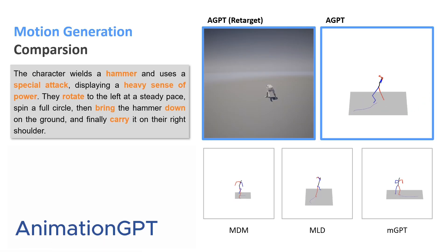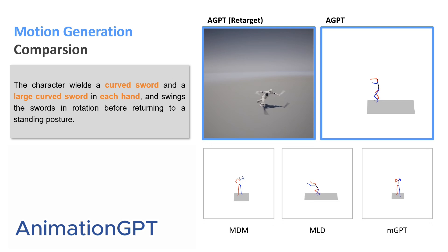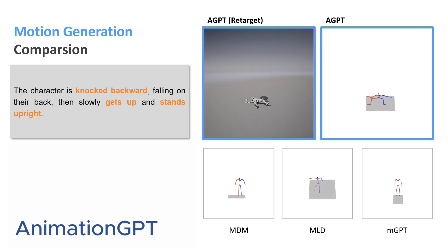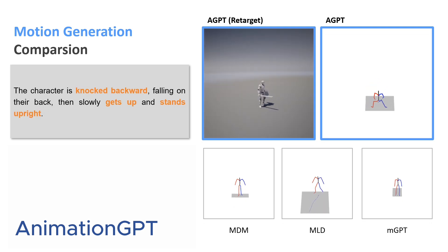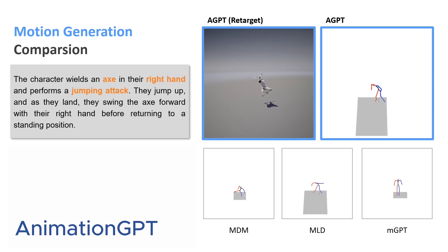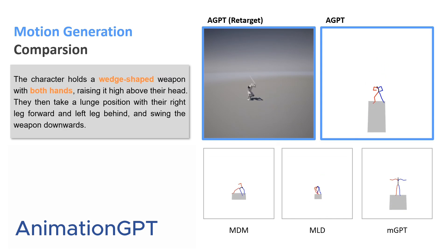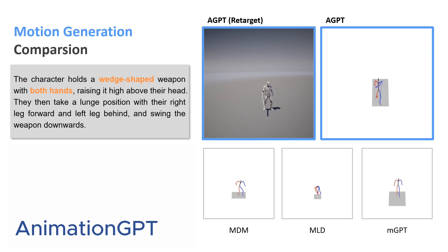Let's check more generation examples: wields a hammer; wields a curved sword; is knocked backwards and then slowly gets up; dual wields axes; performs a jumping attack; holds a wedge-shaped weapon with both hands.